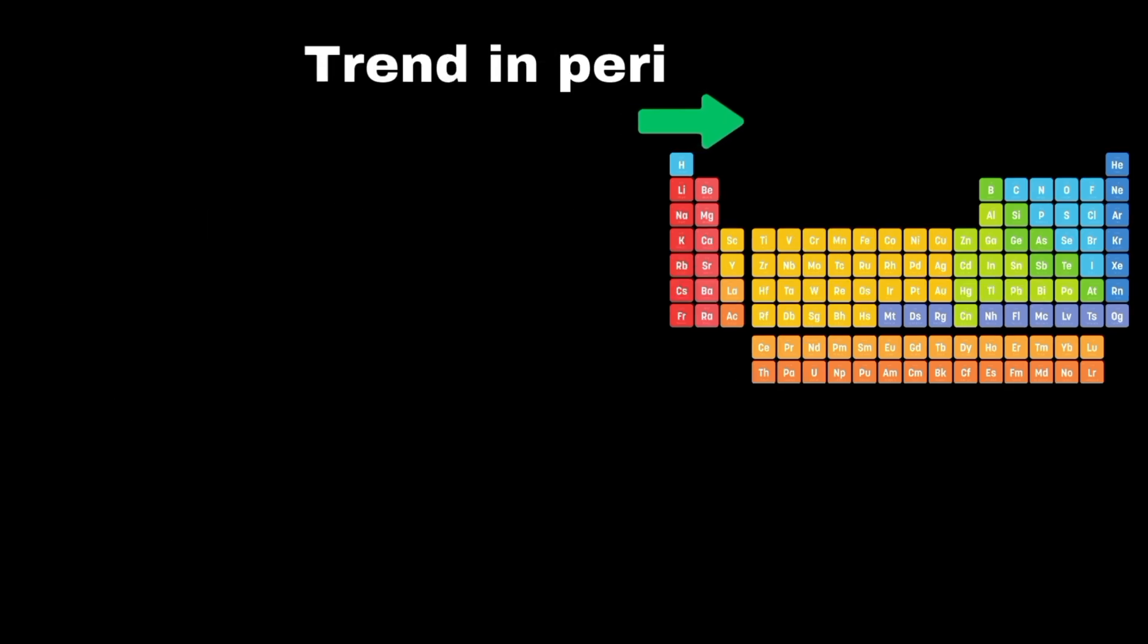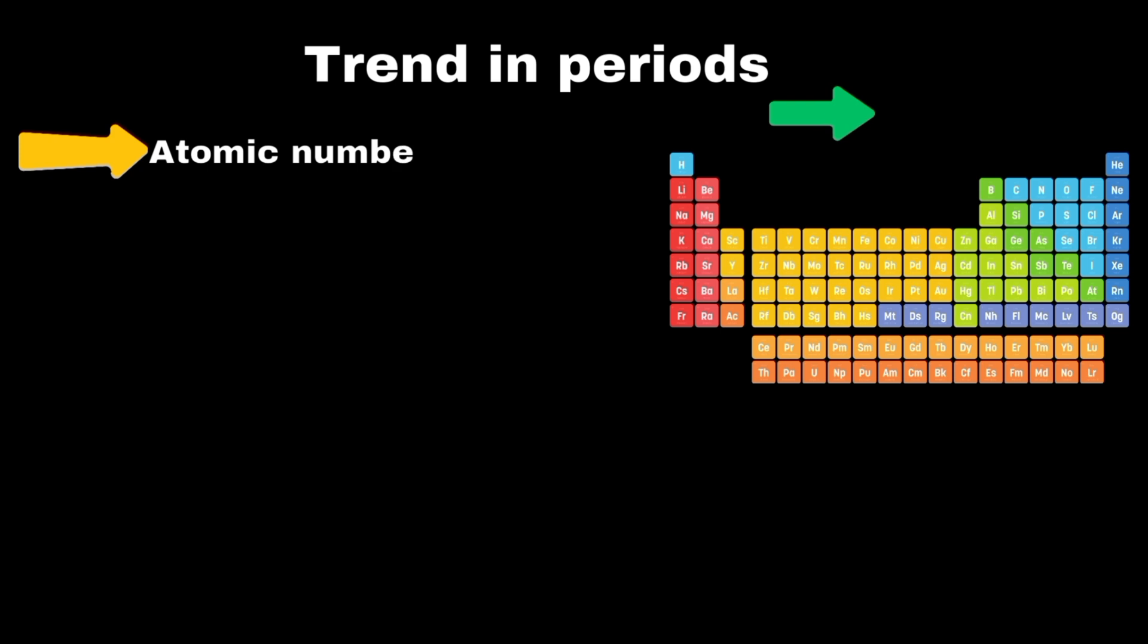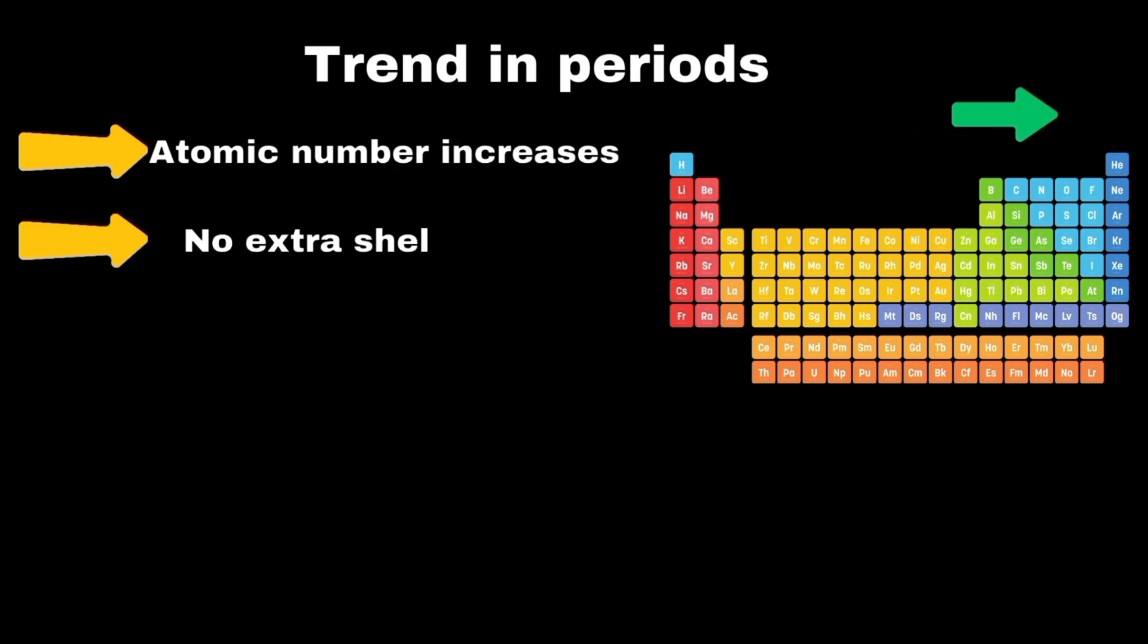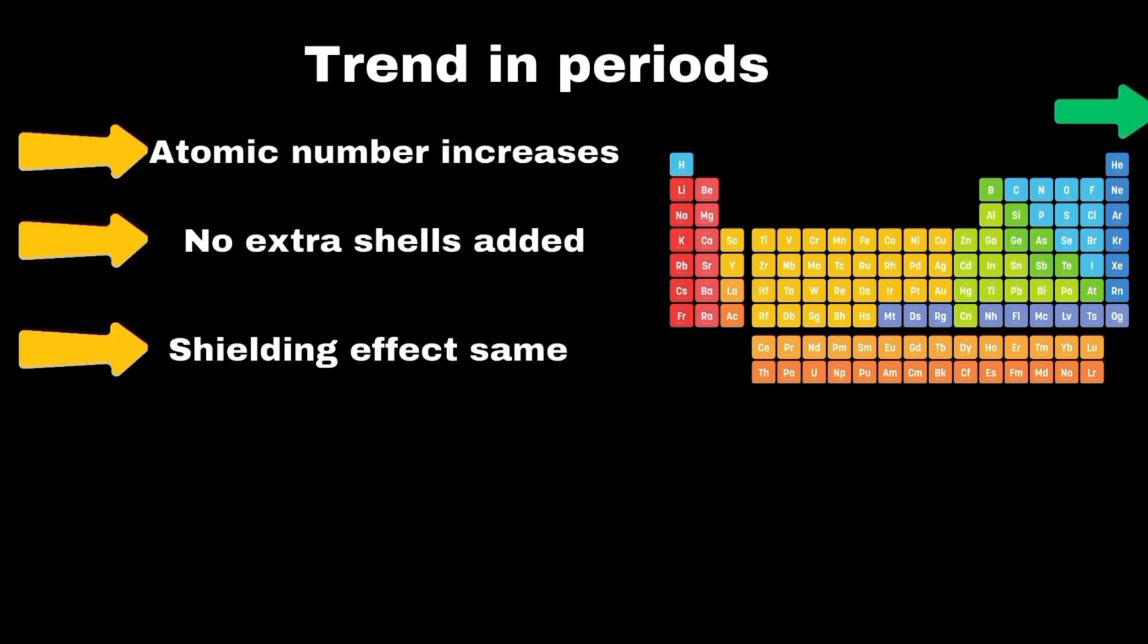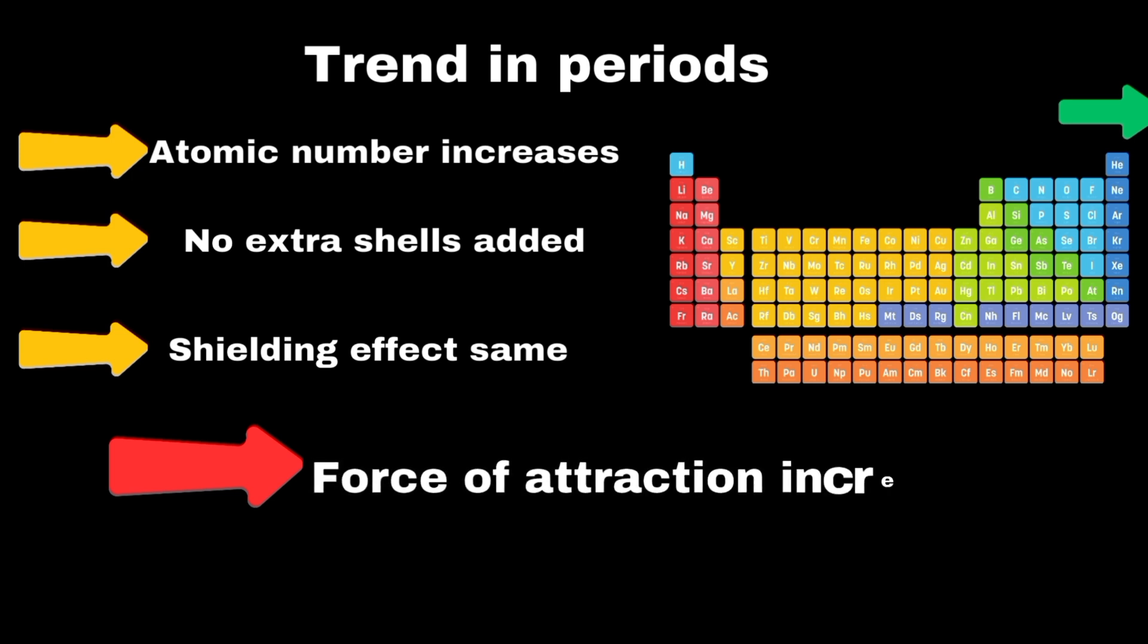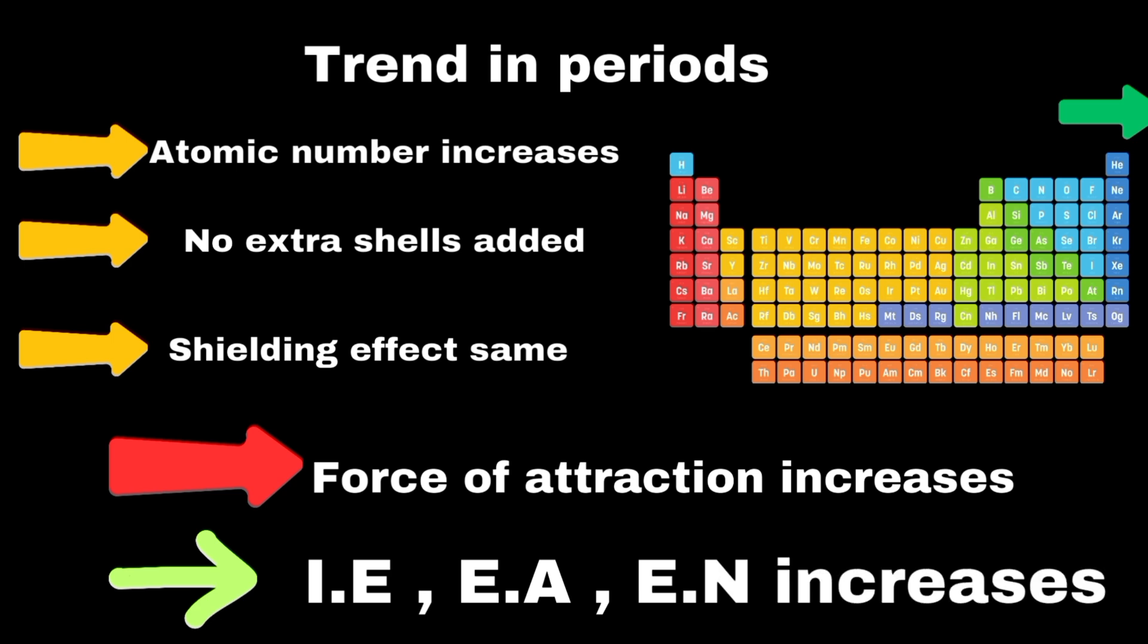In periods, as we move left to right, although atomic number increases, but no extra shells are being added, and also shielding effect remains same. Due to these factors, force of attraction between nucleus and outermost electrons increases, and hence values of ionization energy, electron affinity, and electronegativity increase from left to right in periods.